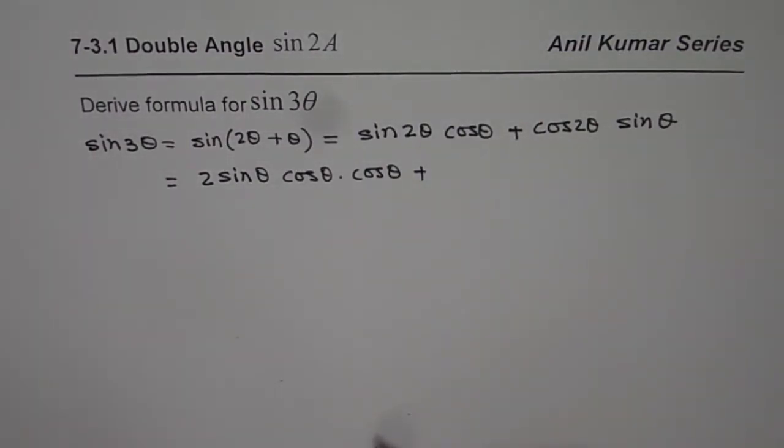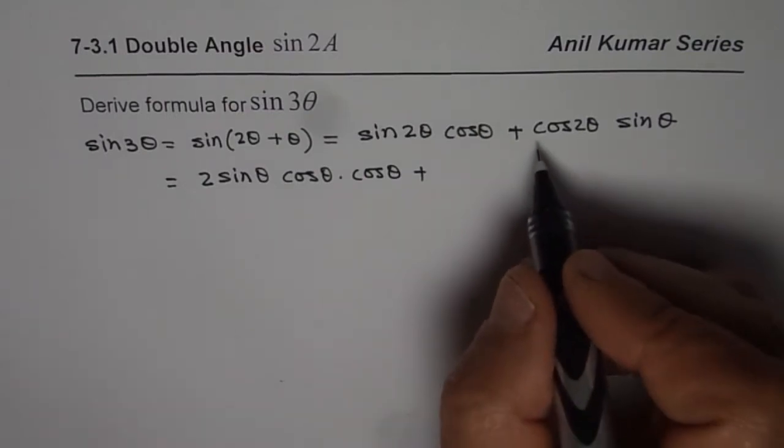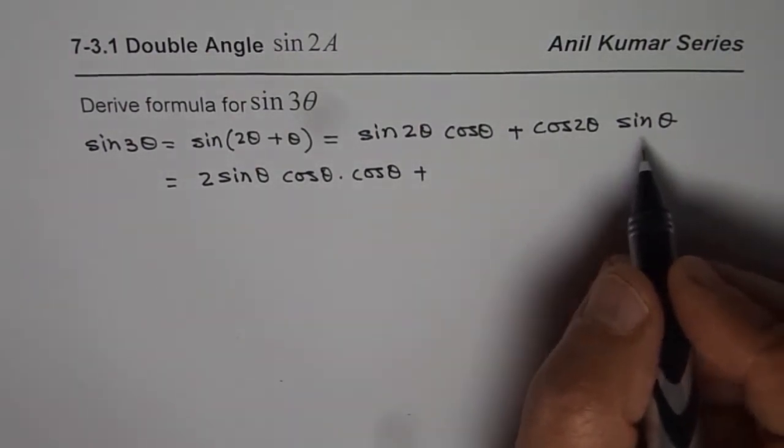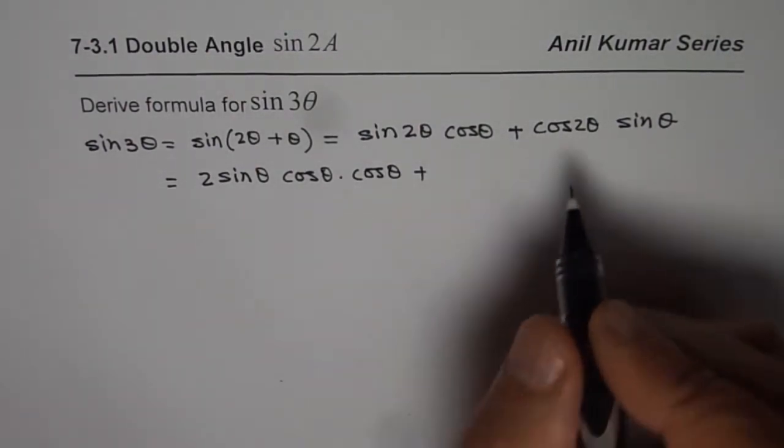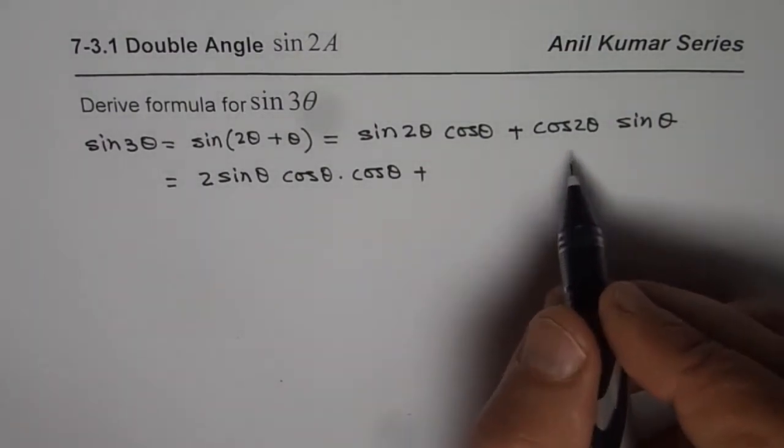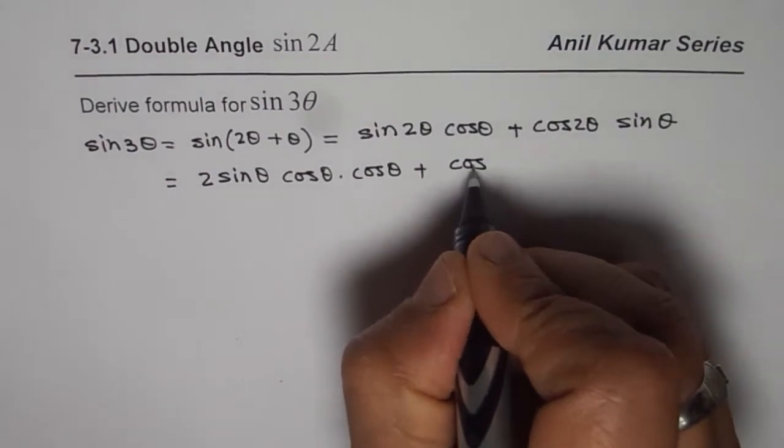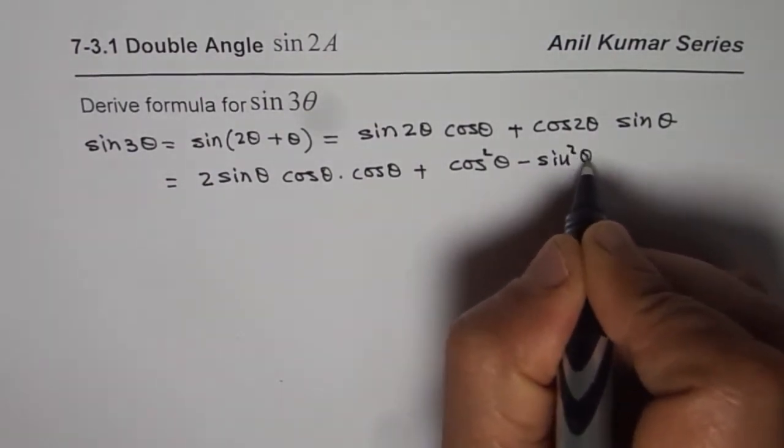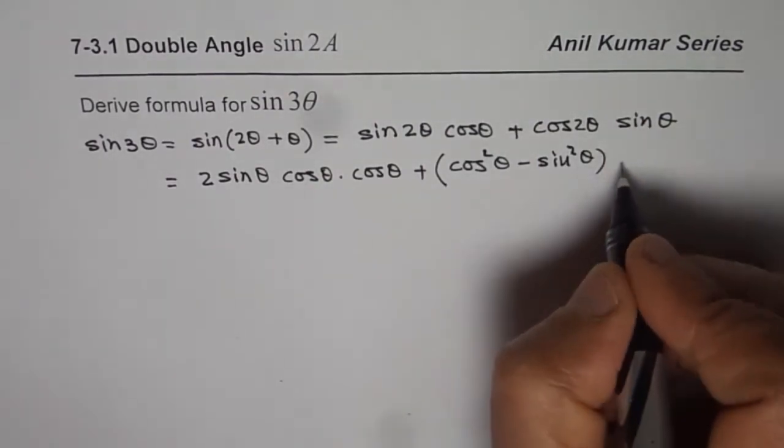You could also write 1 minus 2 sin² θ or 2 cos² θ minus 1. Either way you get a similar solution. Whatever you want you could do at this moment. So let me write cos² θ minus sin² θ to begin with, and then we have sin θ here.